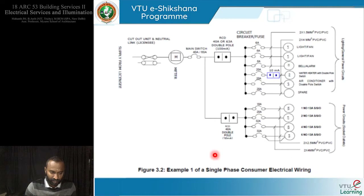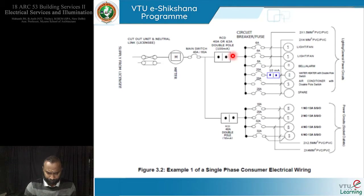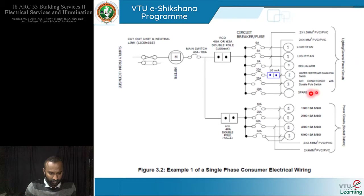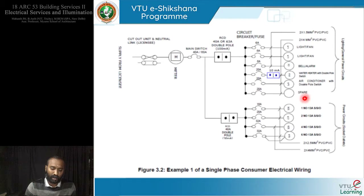Looking at the distribution panel: this comes out at 40 amps or 63 amps, double pole. All these are circuit breakers under this metering or distribution panel, in which we have a switch connecting light, fan, bell, alarm. 6 amps powers lighting and 20 amps powers water heater, air conditioner and one spare — this is the lighting/central power circuit. When you come down it starts with 16 amps, 20 amps, 32 amps — power outlets which are circuit outlets. This is an example of single-phase consumer electrical wiring.